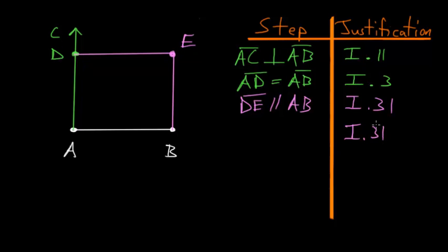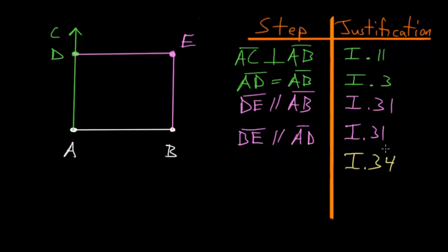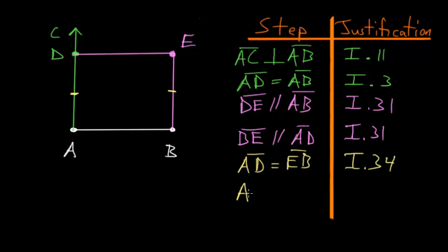Now this four-sided shape is a parallelogram because opposite sides are parallel to each other. We can use Book 1, Proposition 34, which says that in a parallelogram the opposite sides and opposite angles are equal. So we know that AD equals EB, and with the same proposition, AB equals DE.